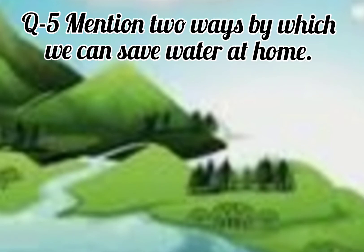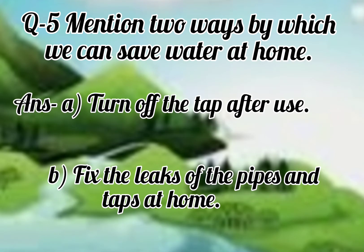Question number 5. Mention two ways by which we can save water at home. First way: turn off the tap after use. Second: fix the leaks of the pipes and the taps at home.